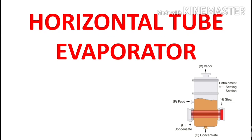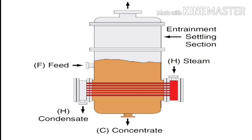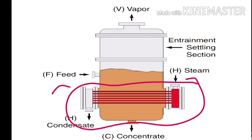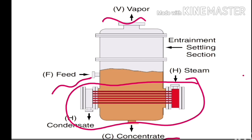This topic is horizontal tube evaporator. You can see the figure at the right bottom side — very good looking equipment. We are going to discuss the principle, construction, working, advantages, and uses of horizontal tube evaporator. It consists of a large cylindrical body with conical or dome-shaped top and bottom. It contains a steam compartment, feed inlet, vapor outlet, and concentrated product outlet — these are the important parts.